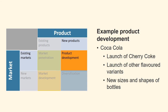The Coca-Cola company has focused on product development strategy for growth by developing new products like new flavors of Coca-Cola. An example of this was the launch of Cherry Coke in 1985, Coca-Cola's first extension beyond its original recipe. The company has since gone on to successfully launch other flavored variants including lime, lemon, and vanilla. Coca-Cola also from time to time introduces new sizes and new shapes of bottles.